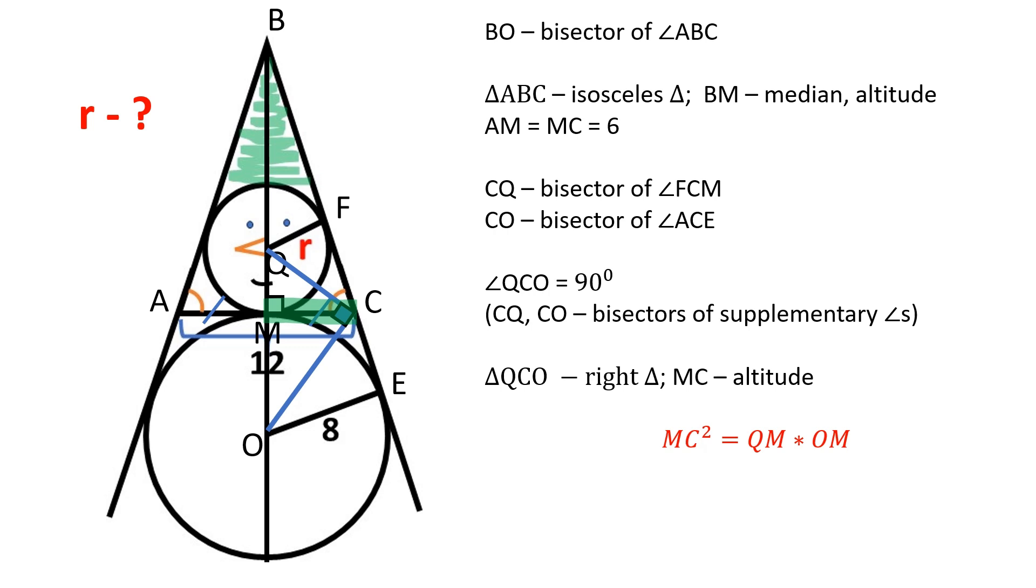MC squared is equal to the product of QM and OM. Let's substitute in the values. QM is equal to 4.5.